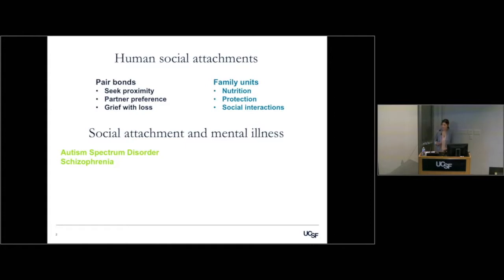Some of the diseases that commonly come to mind when we think of social behavior are autism spectrum disorder and schizophrenia in adolescence. These are disorders where there are profound deficits in social behavior. They are also very heritable diseases where we know that there are risk genes associated with them.